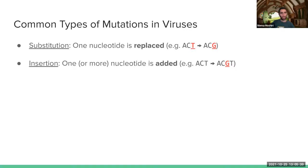Another type of mutation, not nearly as common as substitutions but that still happens, is called an insertion. An insertion is when one or more nucleotides are added to a genome sequence. For example, if the sequence used to be ACT, but then a G got inserted between the C and the T — that's an insertion. Not as common as substitutions, especially for viruses, but it does happen.